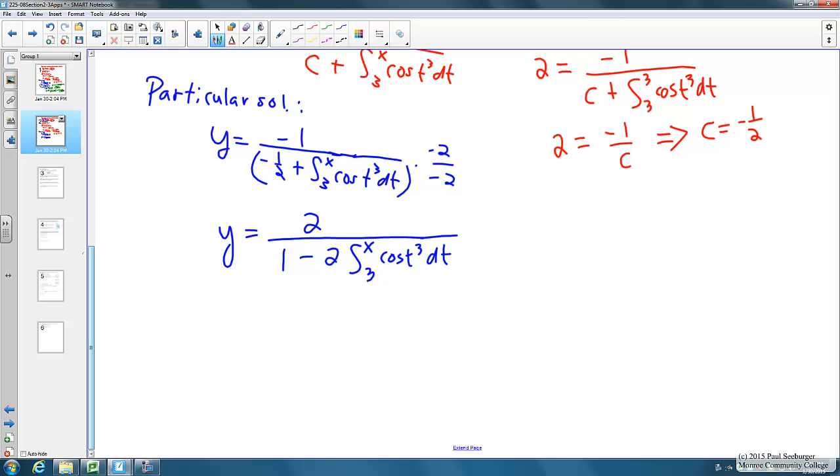That will be our simplified solution to this differential equation with initial condition, or sometimes called an initial value problem. To check it, we want to see that when you put the x value of 3 in that we get 2 out. And we can see if we put 3 in, we do have the integral from 3 to 3 which is going to zero out that integral term and you get 2 as your output. That's quick to check even just mentally here.